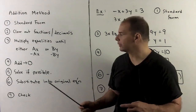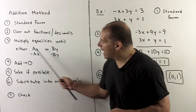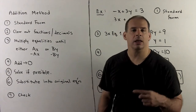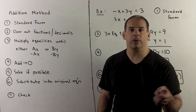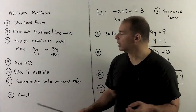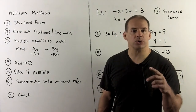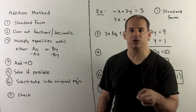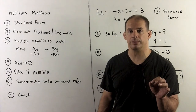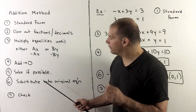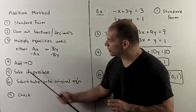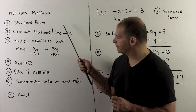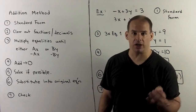We add the equations together — go down each column and record what comes out. We'll then have three possibilities: one column goes to zero and we can solve for a variable, giving a unique solution; or a false statement comes out, meaning no solution; or a true statement with no variables, meaning infinitely many solutions. For a unique solution, we solve for that variable and substitute back into one of the original equations, then check our work.